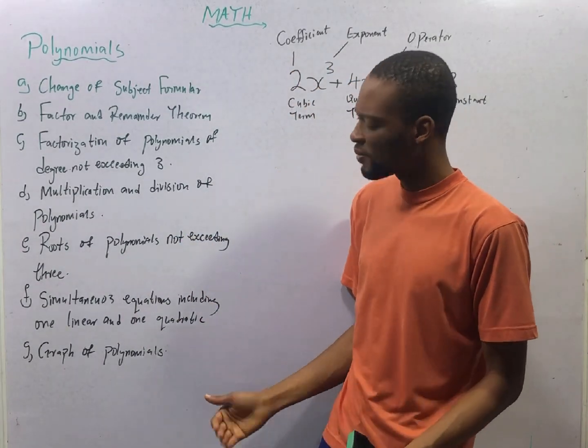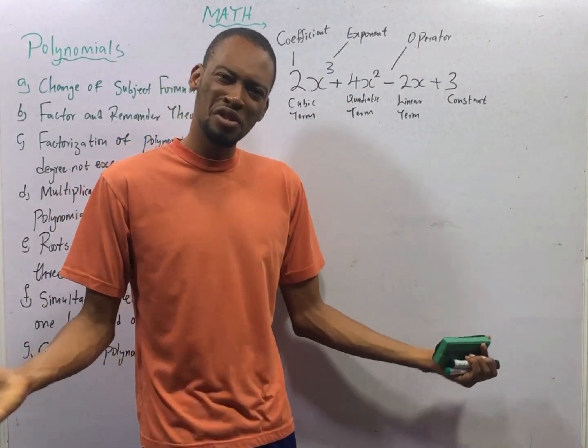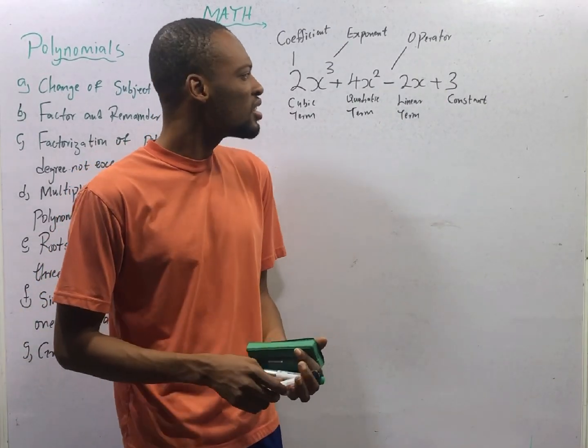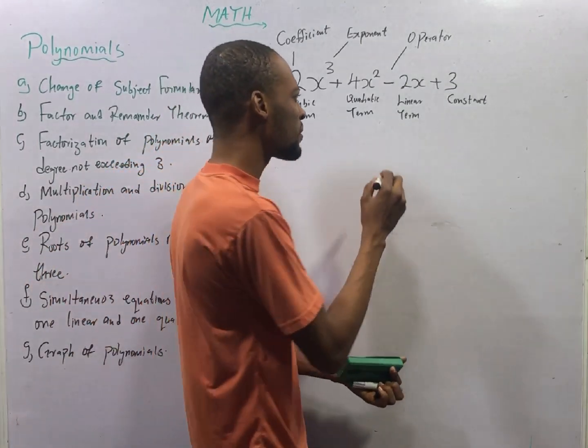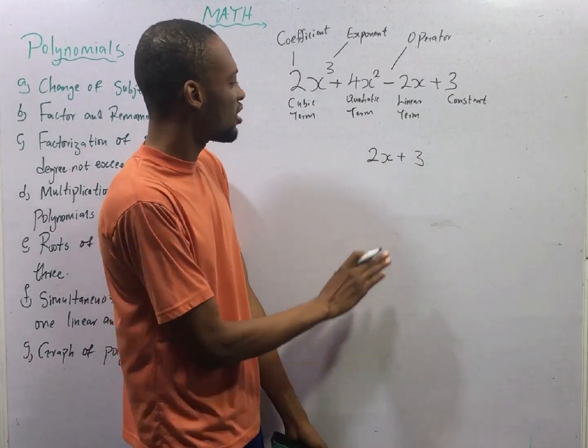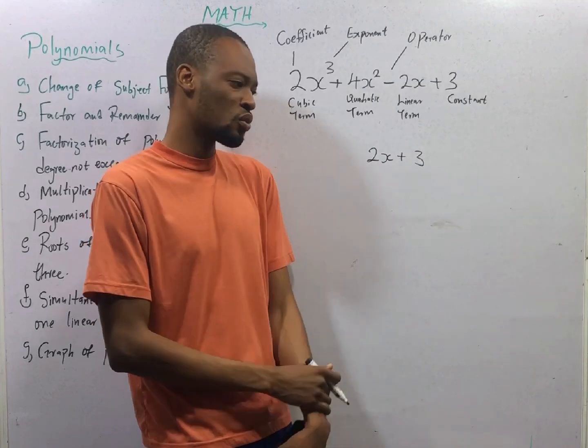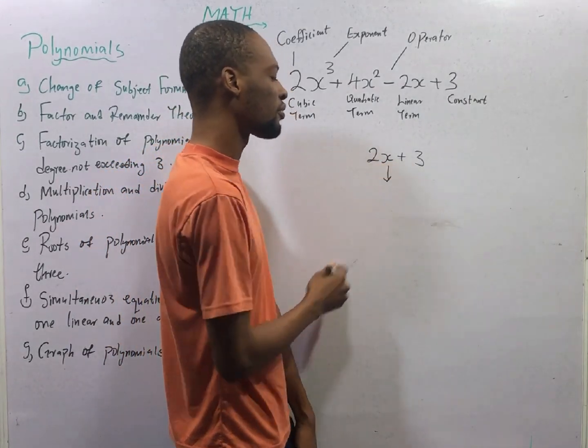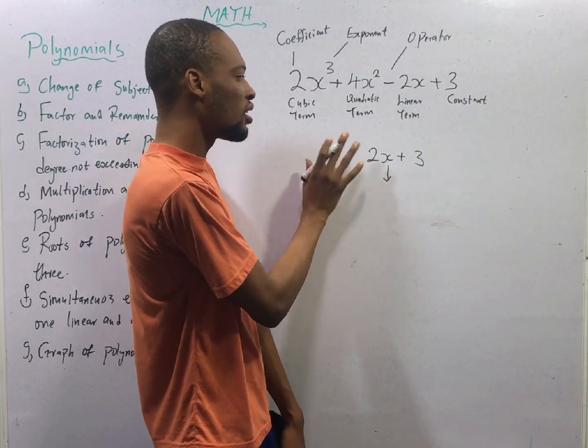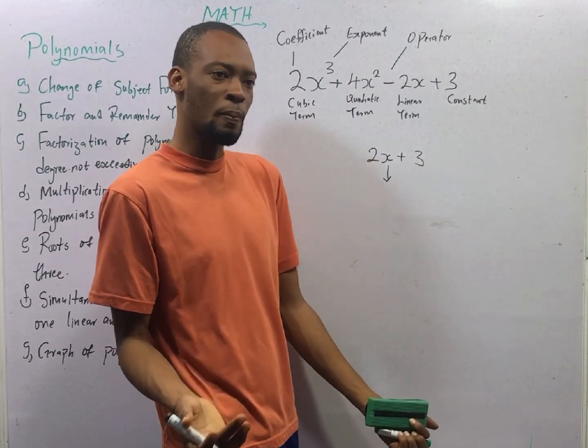Now, what is polynomial? Polynomials is simply an expression with coefficient, exponent, and a constant. If I give you something like this, 2x plus 3, you'll see that this x is a variable. Yes, polynomials have variables as well. 2 is the coefficient of the variable, and 3 is a constant. This expression also has a power.